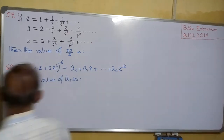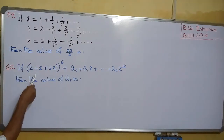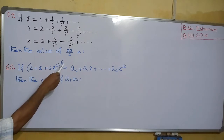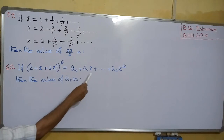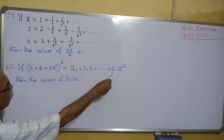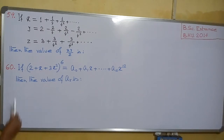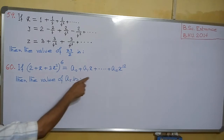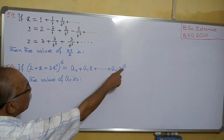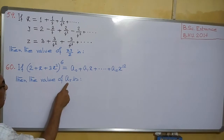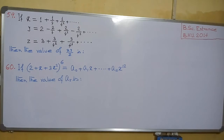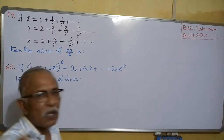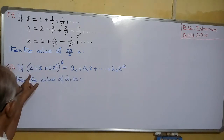Welcome. See this term. If (2 + x + 3x²)⁶ equals a0 + a1·x + ... up to a12·x¹², then the value of a5. Now, a12 is the coefficient of x¹², so a5 will be the coefficient of x⁵. We have to find the coefficient of x⁵.